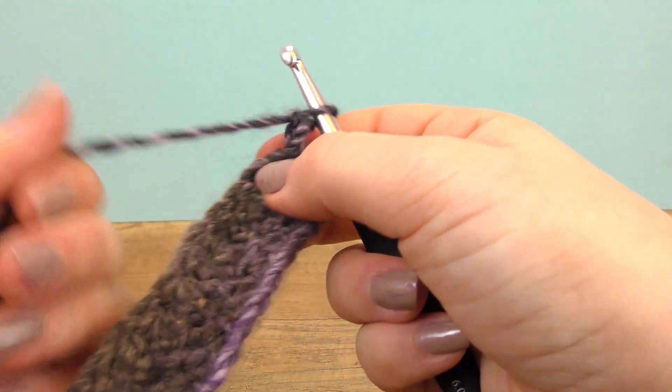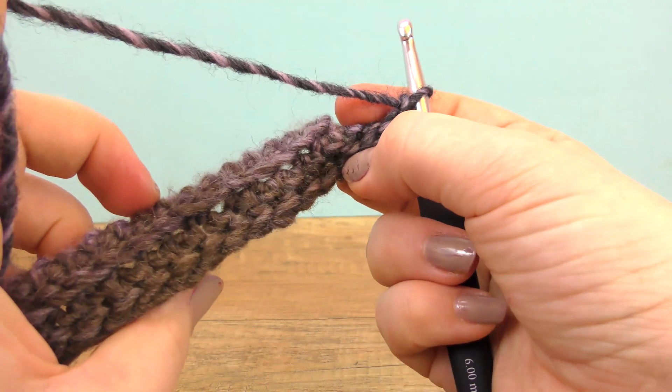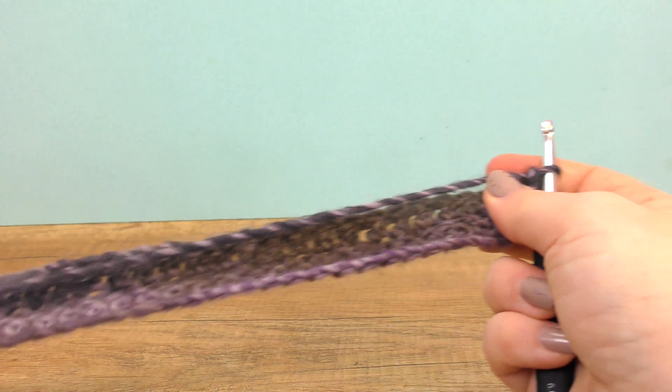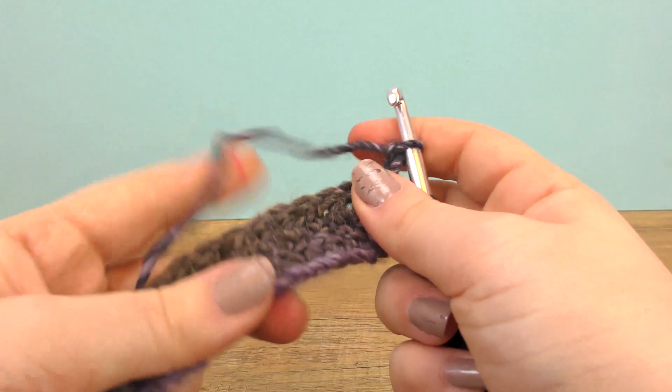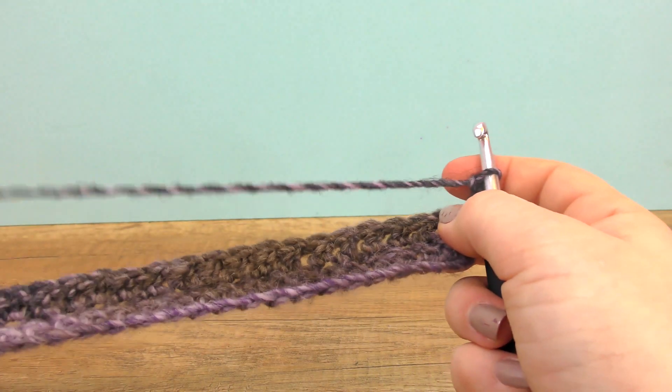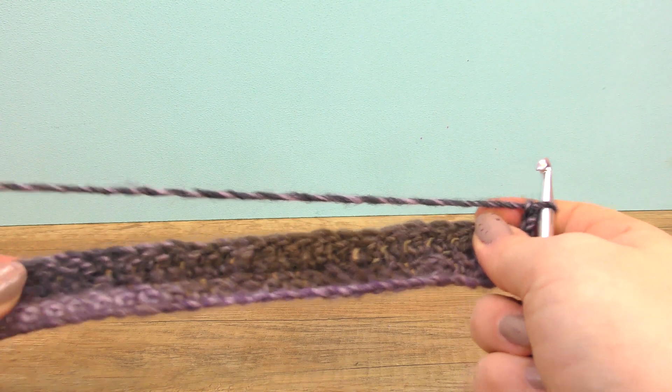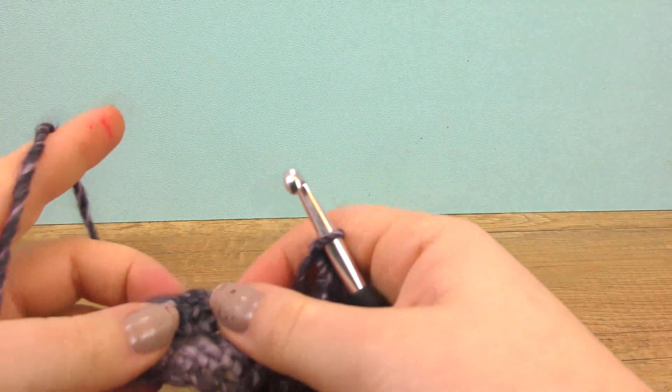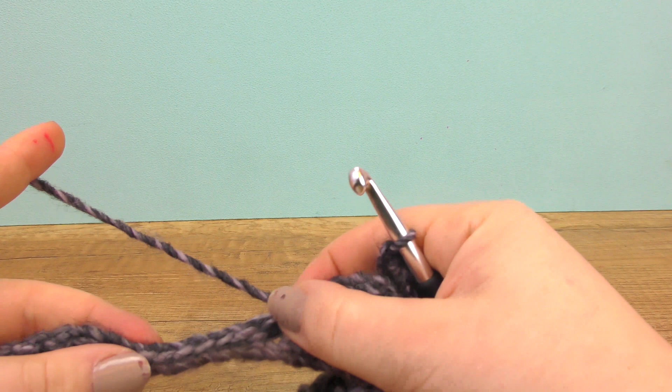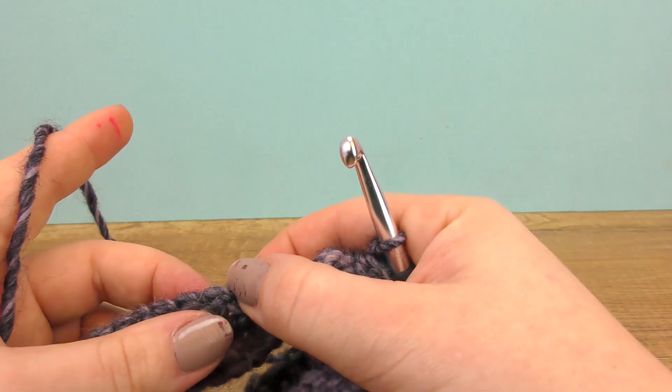We do four more rows identical to the ones we just did. So we do the 25 trebles, then one half treble crochet, one single crochet, six slip stitches, one single, one half, and 25 trebles.